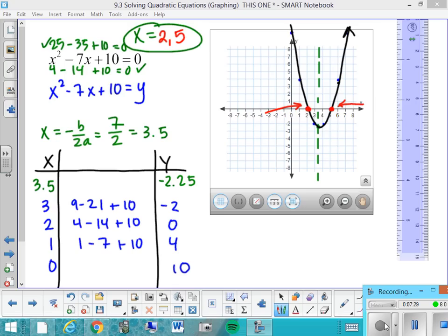5 squared equals 25 minus 35 plus 10 equals 0. And yep, again, so here we have two great solutions to that original equation. And it was all thanks to graphing the related function. So we're going to just look at a couple more, and then I'll see you in class.